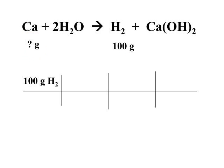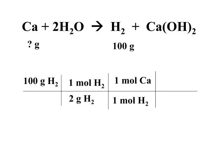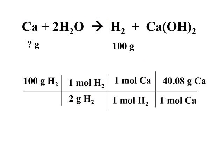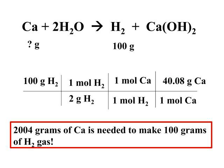Following our pattern, we take our 100 grams of hydrogen gas and first convert that to moles using the molar mass of 2 grams per mole for hydrogen. Then we use the mole ratio between hydrogen and calcium, which is one to one — but we must show this step explicitly to convert moles of hydrogen to moles of calcium. Our final step is to convert moles of calcium back to grams using the molar mass of calcium from the periodic table. Putting that into our calculator gives us a theoretical yield of 2,004 grams. So 2,004 grams of calcium is needed to produce 100 grams of hydrogen.